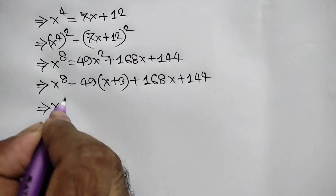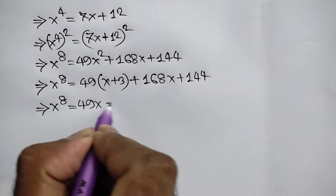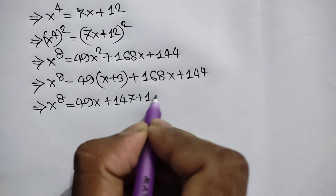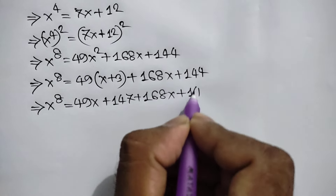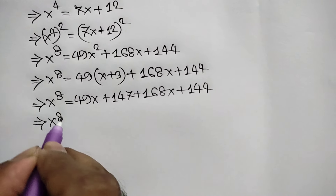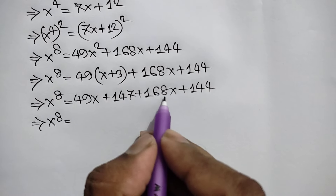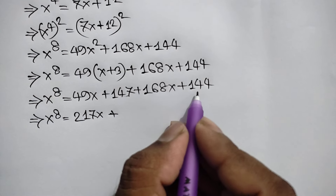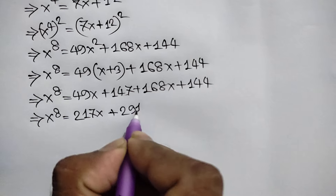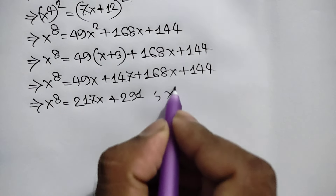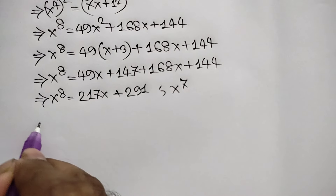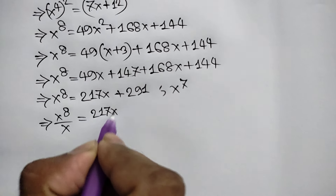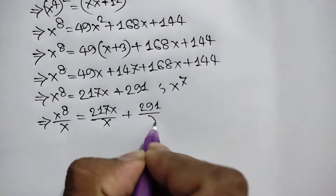So x⁸ equals 49x plus 147 plus 168x plus 144. Combining like terms: 49x plus 168x is 217x, and 147 plus 144 is 291. So x⁸ equals 217x plus 291. Since we need x⁷, we divide both sides by x: x⁷ equals 217 plus 291 over x.